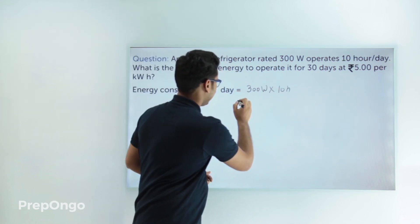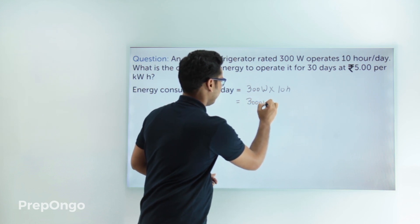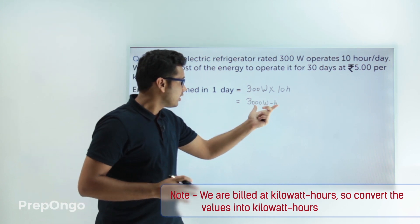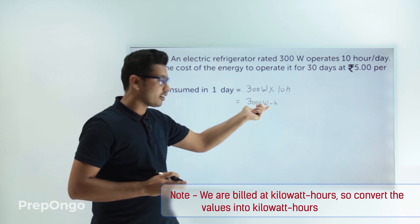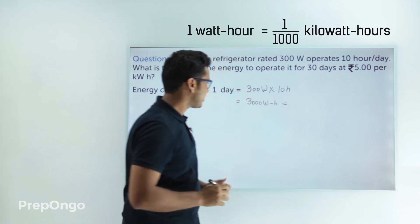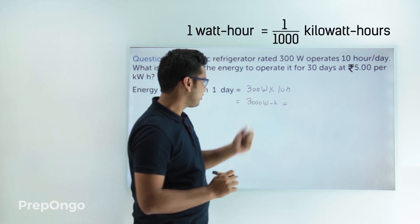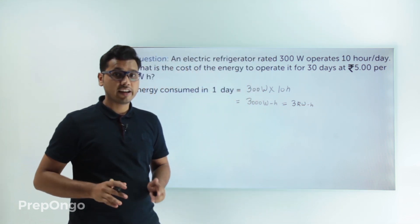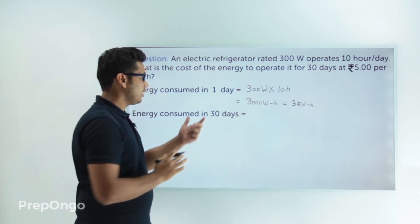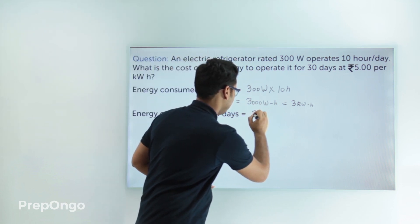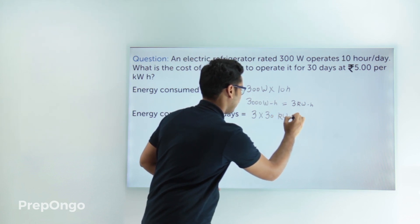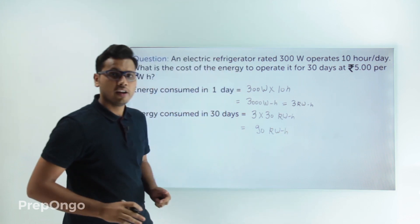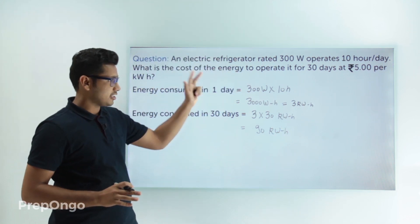The energy consumed in one day equals the power rating multiplied by the time operated: 300 watts × 10 hours = 3000 watt-hours. We are billed in kilowatt-hours, so we divide by 1000 to get 3 kilowatt-hours per day. For 30 days, that is 3 × 30 = 90 kilowatt-hours.